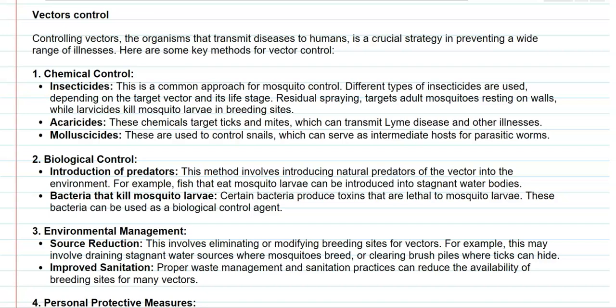The first is chemical control. Using certain insecticides can control mosquitoes, with different types used depending on the target vector's life stage. For example, residual spraying can curtail the population of mosquitoes resting on walls — targeting the adult population. Whereas larvicidal insecticides can kill mosquito larvae present in breeding sites, mainly in stagnant water or in pots.